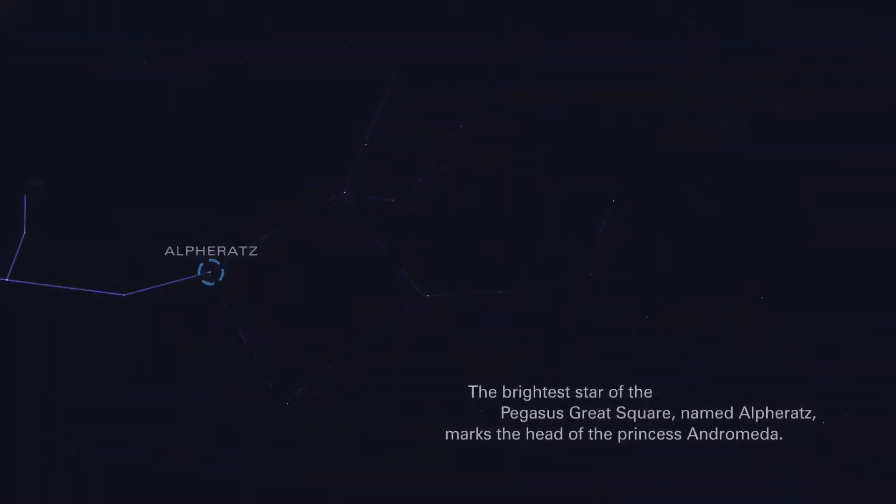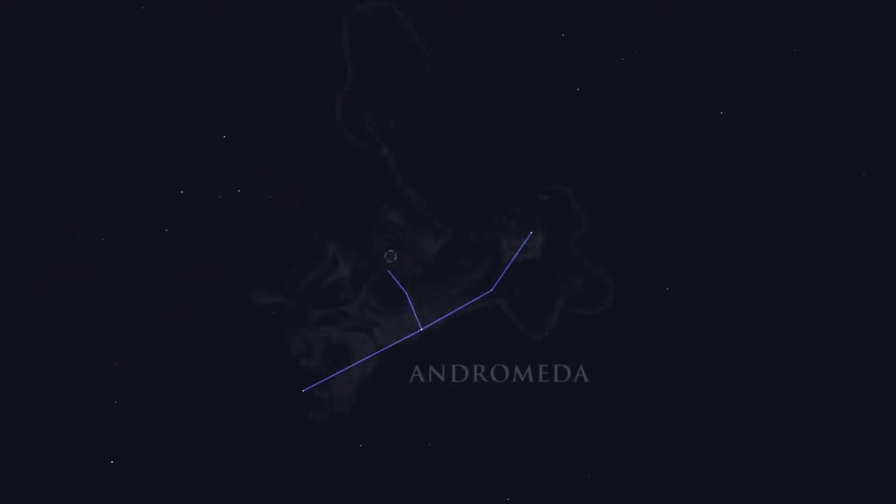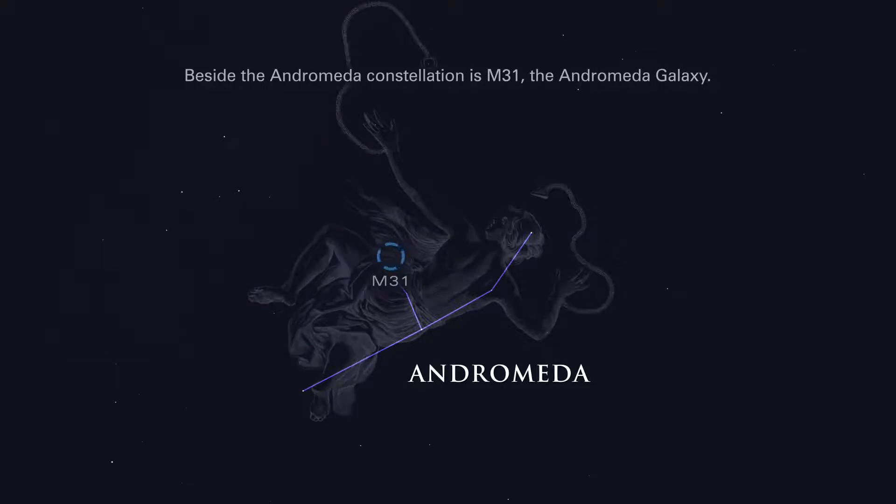The brightest star of the Pegasus Great Square, named Alpheratz, marks the head of the princess Andromeda. Beside the Andromeda constellation is M31, the Andromeda galaxy.